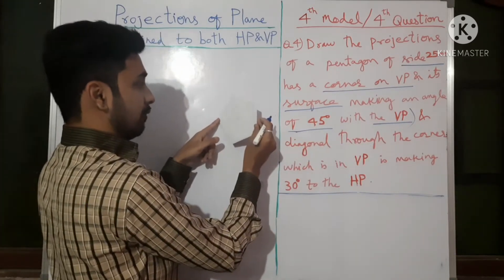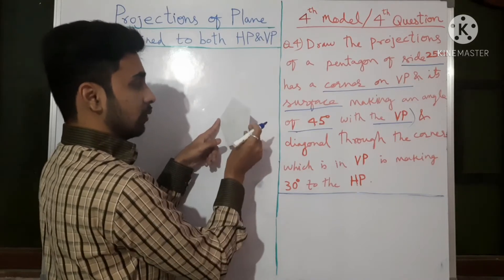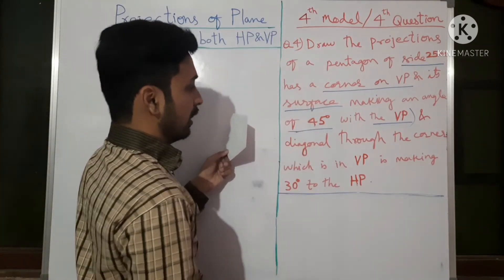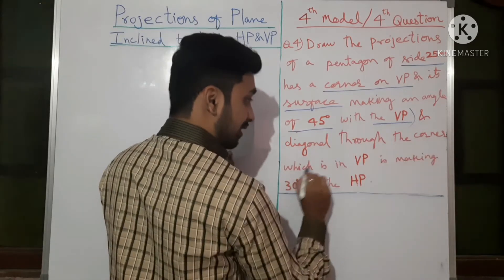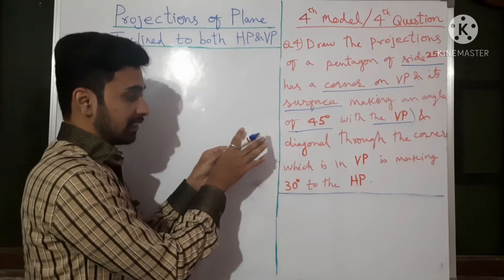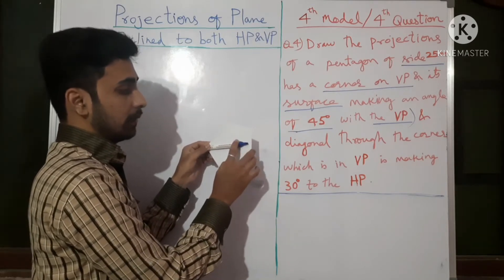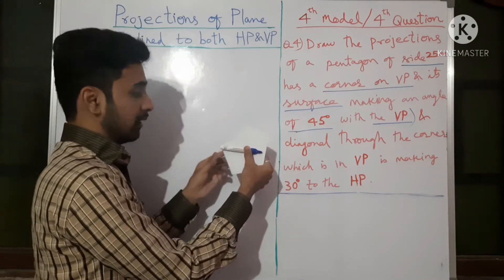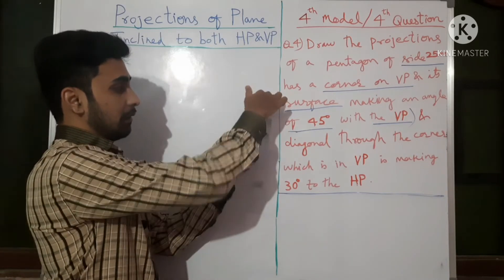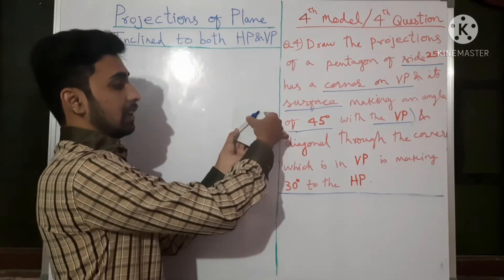The corner is in the VP but the surface is not touching or parallel to the VP; it makes 45 degrees with VP. The diagonal through the corner which is in the VP — from this corner to the opposite edge — should be perpendicular to that edge at its midpoint. This diagonal makes 30 degrees with HP. So 30 degrees with HP means you tilt it in either direction.